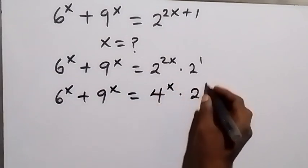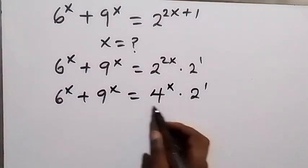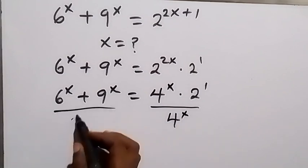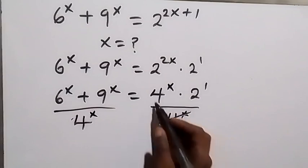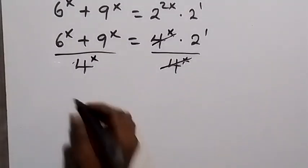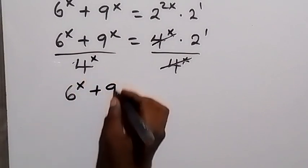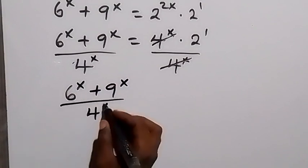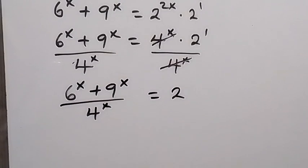Times 2 raised to power 1. From here, let's divide both sides by 4 raised to power x — divide this side by 4 raised to power x, and also divide this side by 4 raised to power x. So 4 raised to power x will cancel each other, and this reduces to 6 raised to power x plus 9 raised to power x divided by 4 raised to power x equals 2.